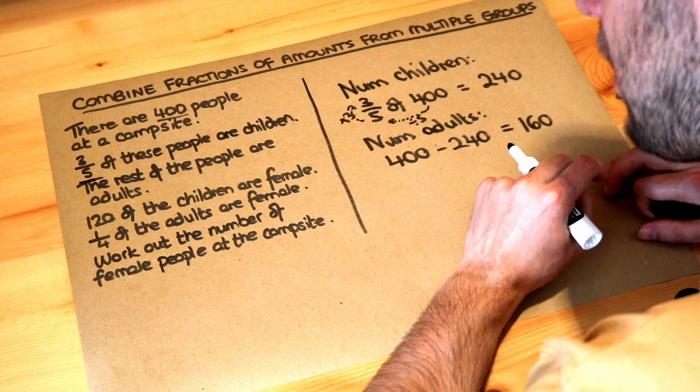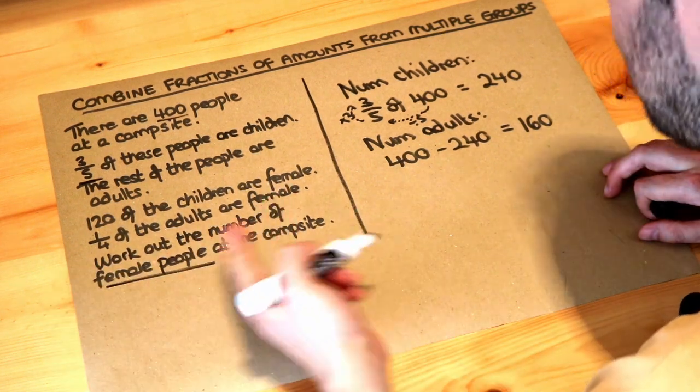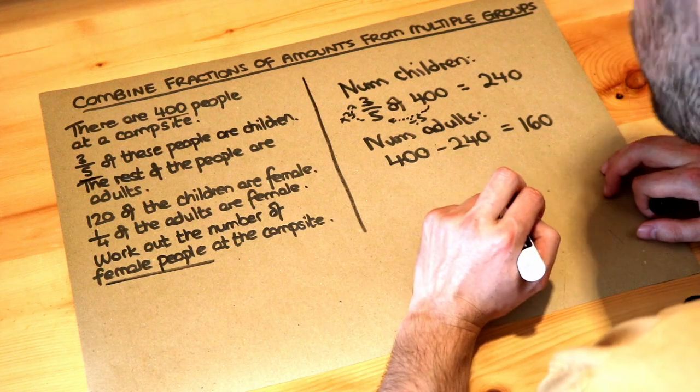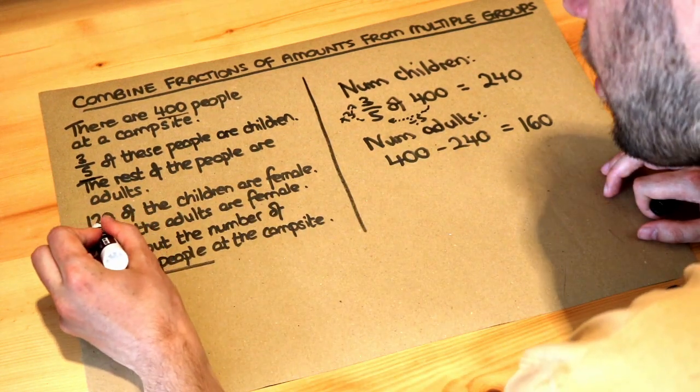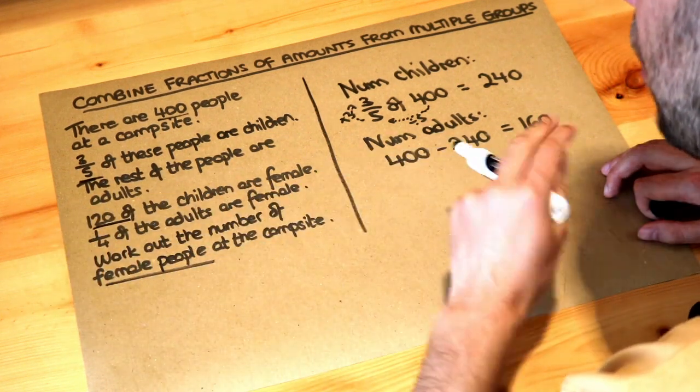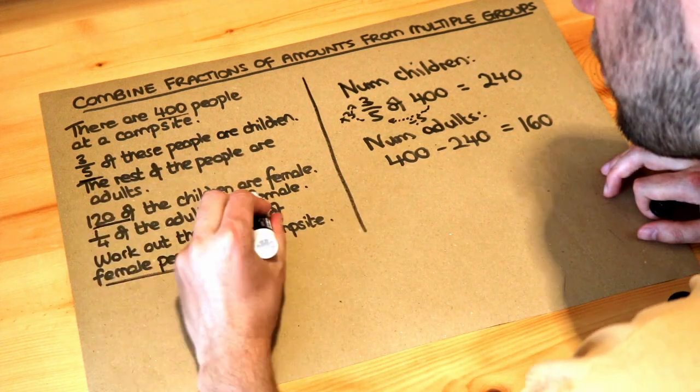So we've got the number of children now, we've got the number of adults, and we want to work out the number of female people at the campsite. They could be female children or they could be female adults. Now we're already told that 120 of the children are female, so we already know the female children, but we need to know the female adults as well.